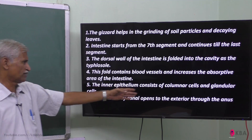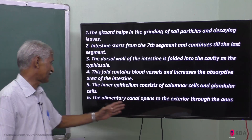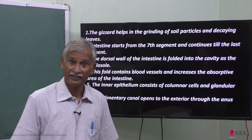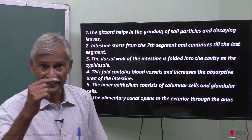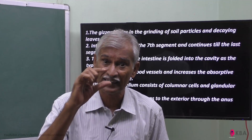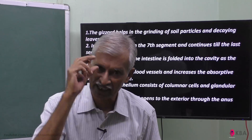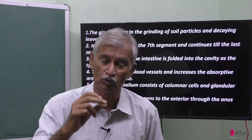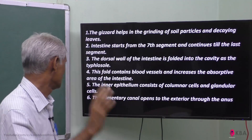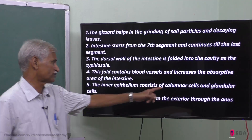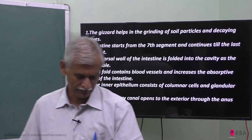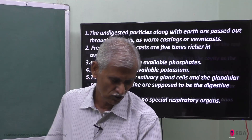The inner epithelium consists of columnar cells and glandular cells, which produce all of the digestive enzymes. The alimentary canal also opens to the exterior through the anus, which is in the pygidium segment.